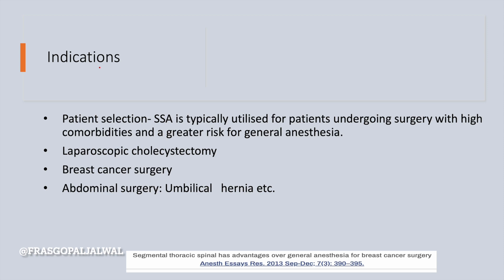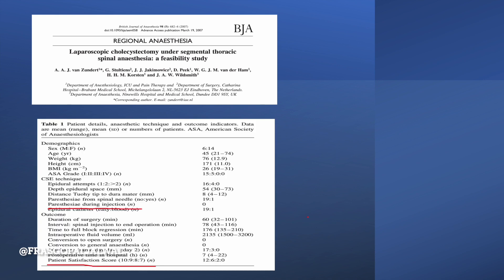What are the indications? Patient selection is very important when going for Segmental Spinal Anesthesia, as it is specially utilized for high-risk patients who have a greater risk for general anesthesia. Other indications include laparoscopic cholecystectomy, breast cancer surgery such as MRM, abdominal surgery, umbilical hernia, etc. In 2007, a study was published on laparoscopic cholecystectomy under Segmental Thoracic Spinal Anesthesia, with patient demographic details presented.